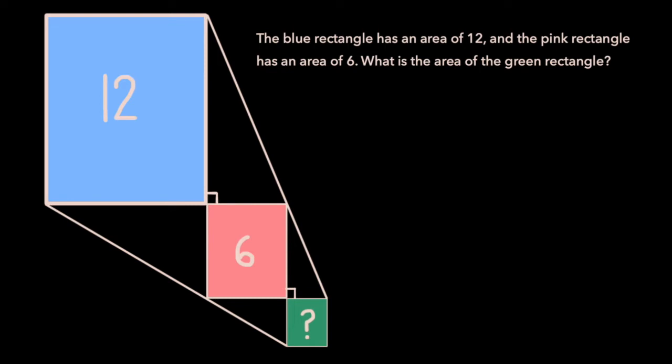To begin, let's say the shorter side of the blue rectangle is of length a. We know the area of the blue rectangle is 12, and so this means the length of the longer side of the blue rectangle must be 12 over a, because 12 over a times a equals 12.